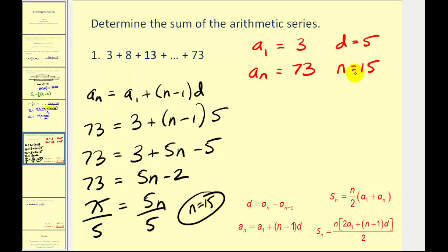Now we have all the information we need to find this partial sum. The sum of the first fifteen terms will equal n divided by two. Fifteen divided by two. Times the quantity of a sub one which is three. Plus a sub fifteen which is a sub n. So that's 73. So we're going to have fifteen over two times seventy-six over one. Simplify this. That will be a one. That will be a thirty-eight. So the sum of the first fifteen terms is equal to fifteen times thirty-eight which equals five hundred seventy.